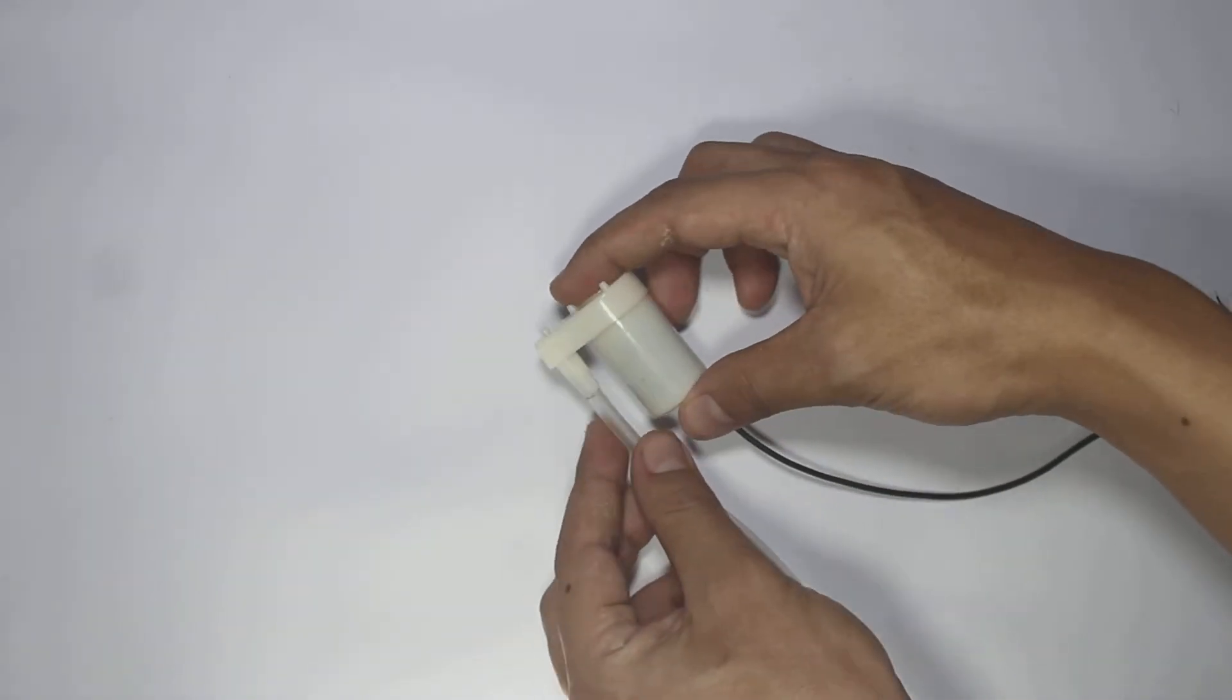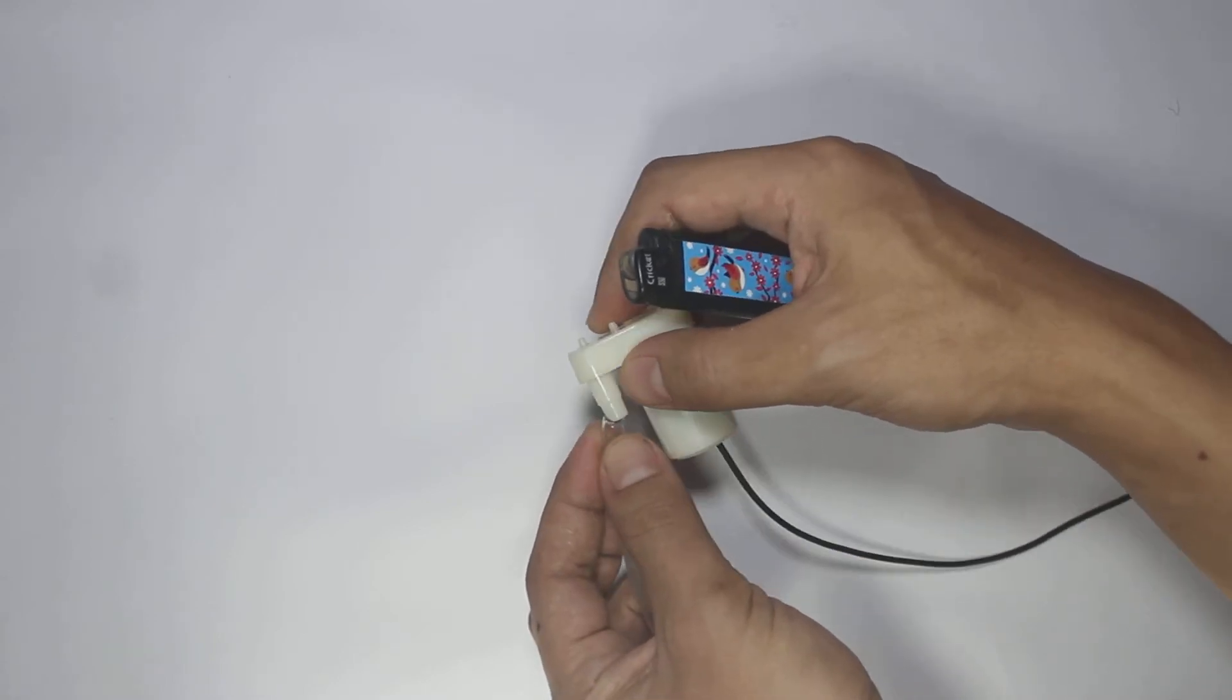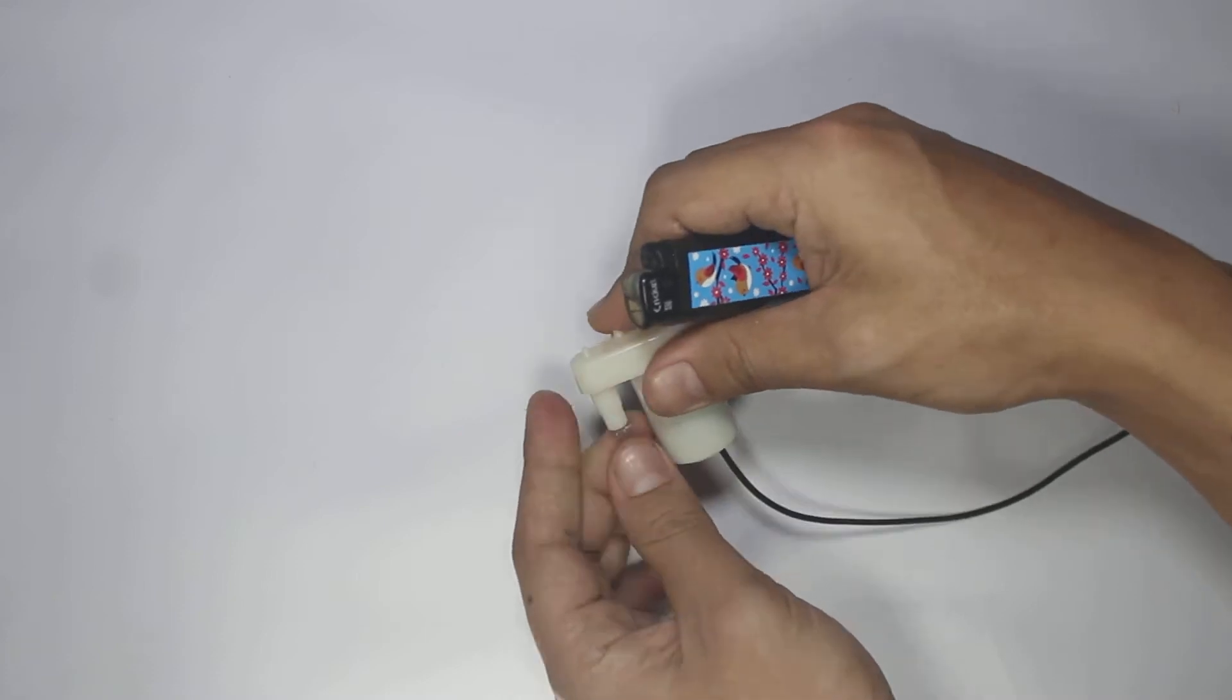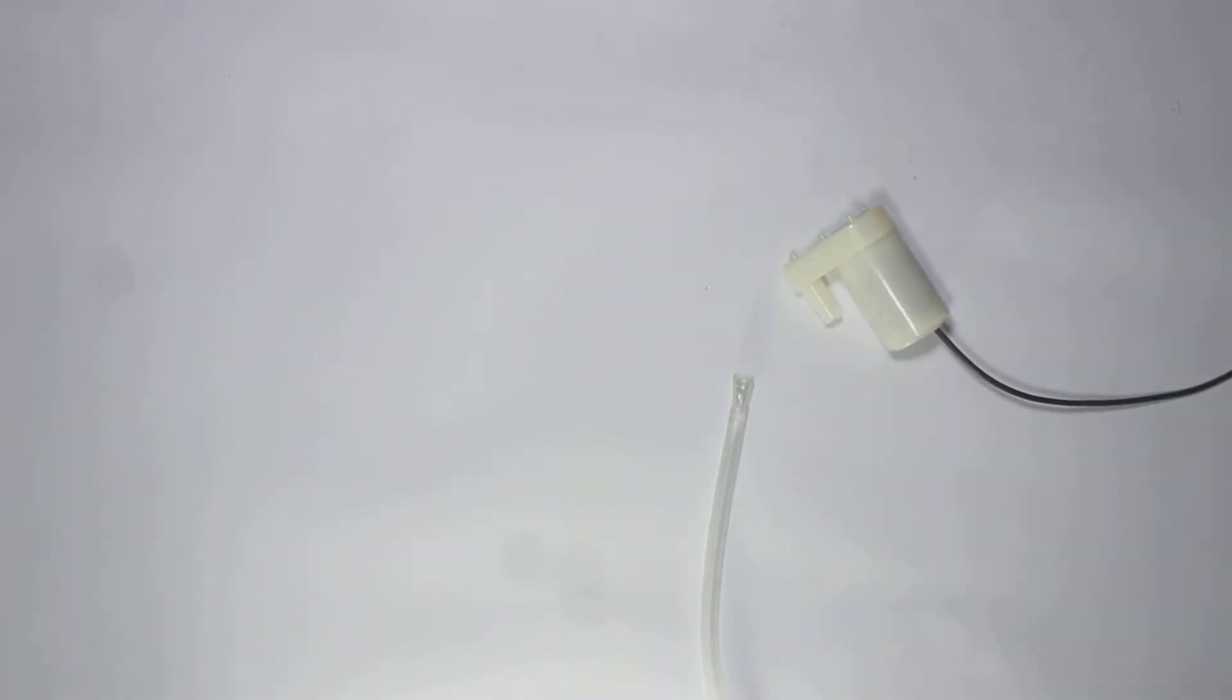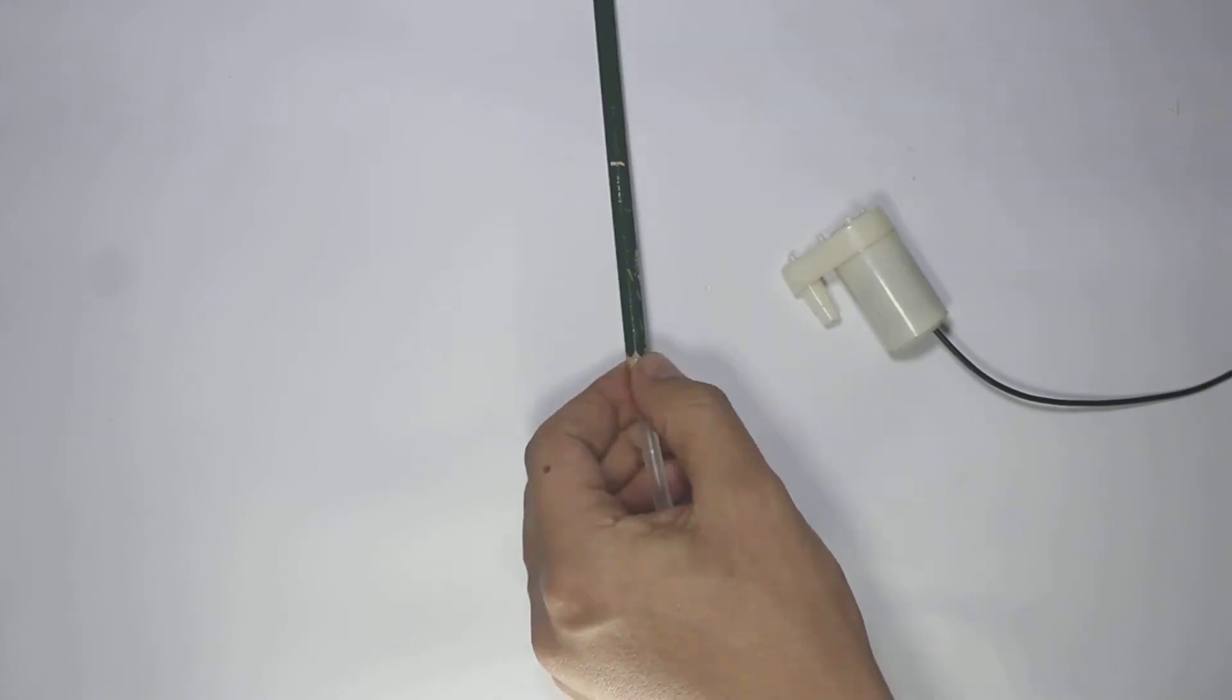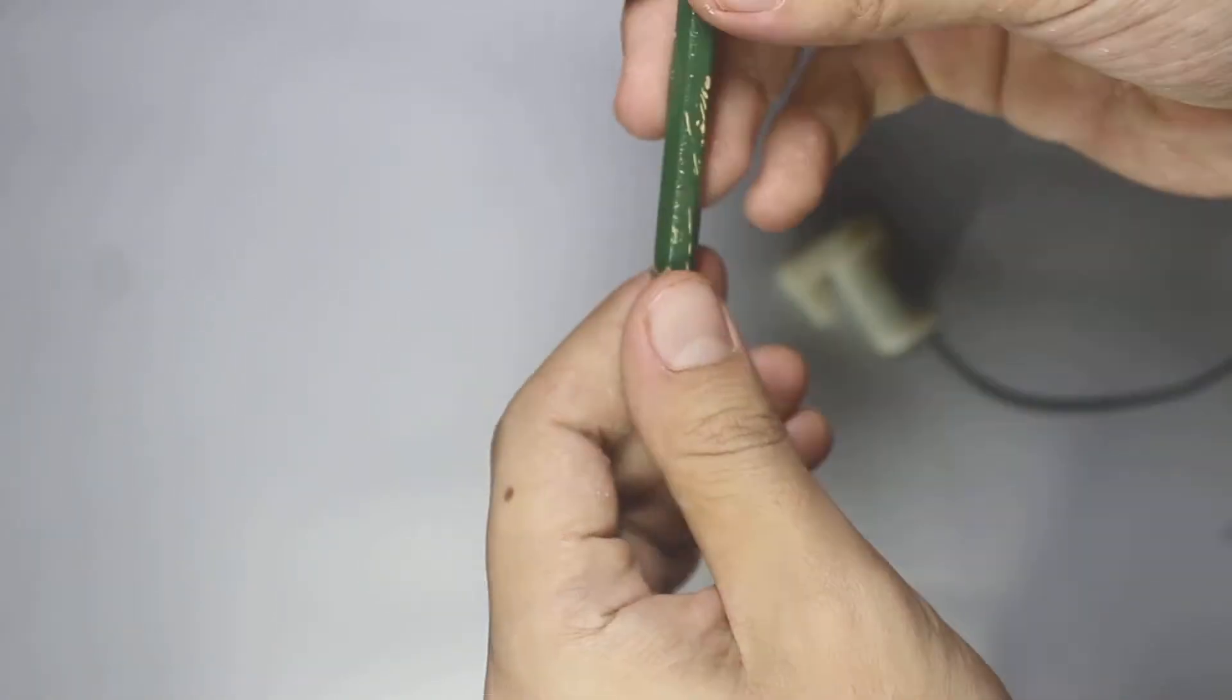We need to connect the flexible water tubing pipe to the DC pump, and we have to stretch the end of the pipe so that it can fit the water pump. I use the lighter to heat the end of the pipe and use a pencil to help it stretch so it can fit the pump.